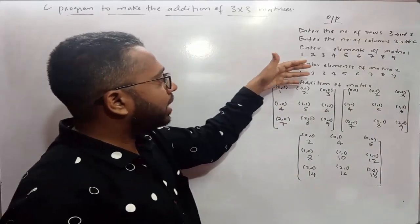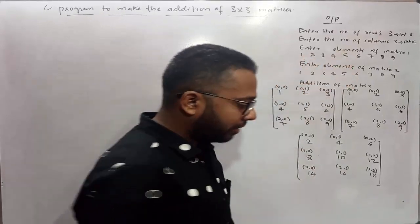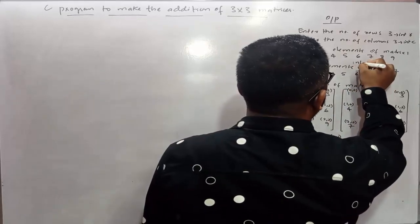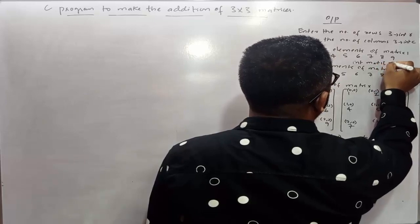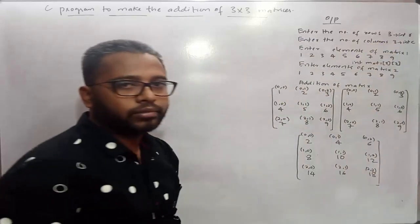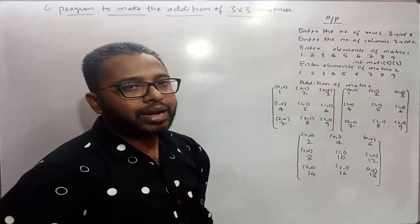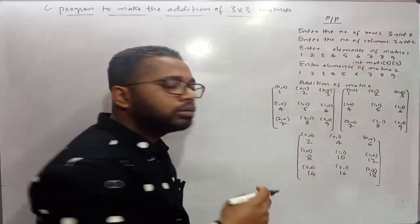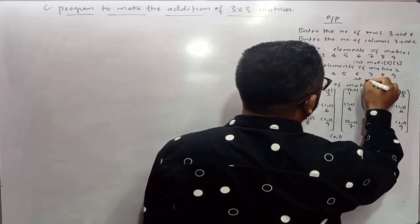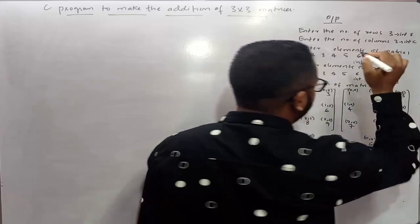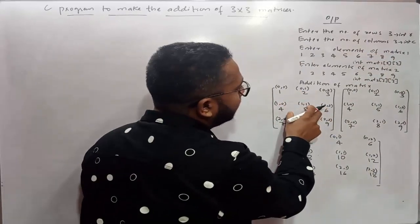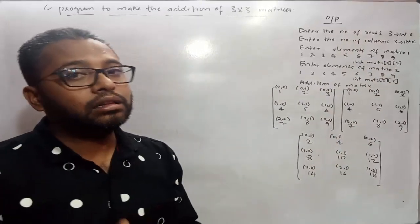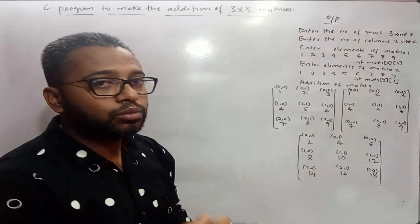Next the program will ask you to enter the elements of matrix 1. I have entered elements starting from 1 to 9. To hold these 9 elements in your program you need to create an array — integer matrix1. Then it will ask you to enter the elements of matrix 2, again from 1 to 9. To hold these 9 elements of matrix 2 you need to create one more array — integer matrix2. The first matrix gets stored inside matrix1 and the second matrix gets stored inside matrix2.